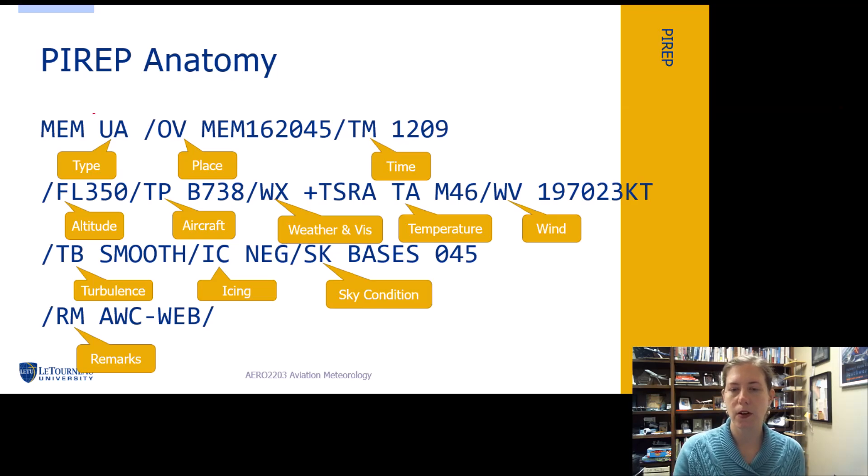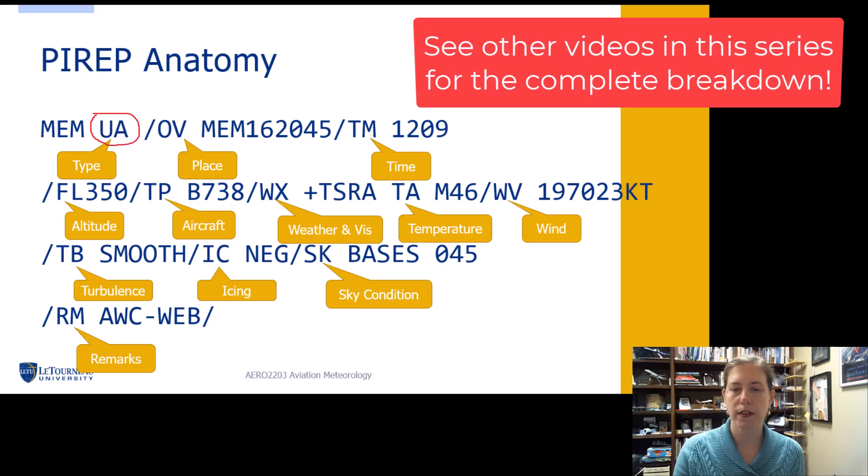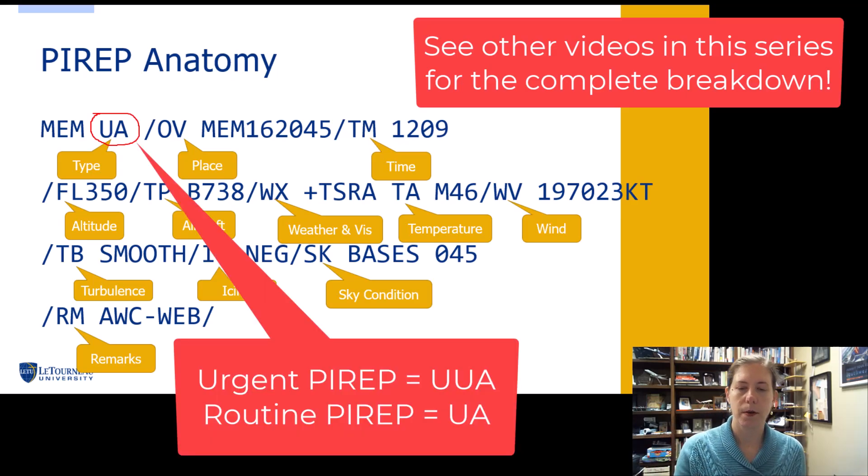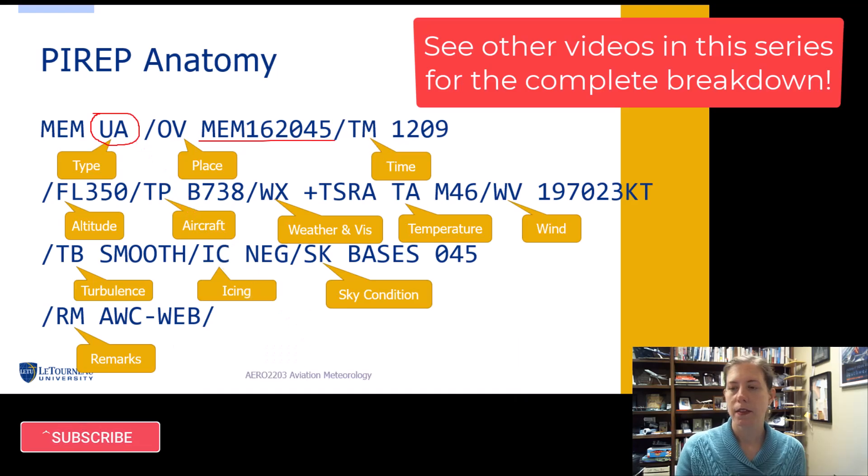The first thing to know is where we're looking for the urgency, right at the beginning of the report. So remember UA, not urgent. UUA is an urgent pilot report. Then we always follow the same format. We're going to have the place that the aircraft reported whatever it saw, the time that's in UTC. We're going to get into more of how to read the place in the next video and how to read the rest of the pilot report in the next videos.